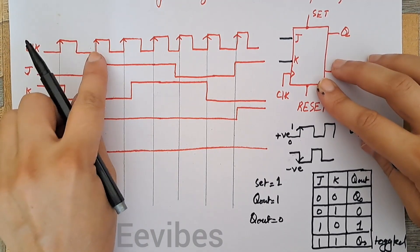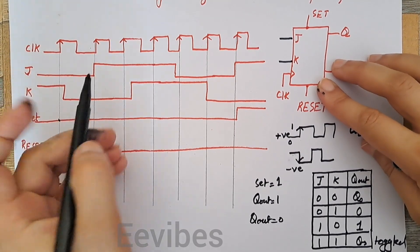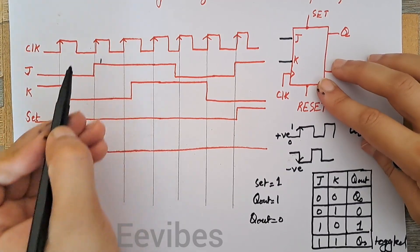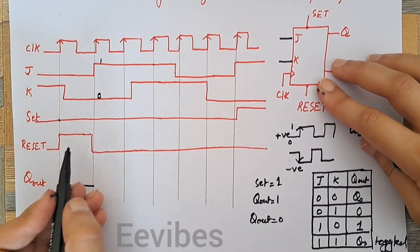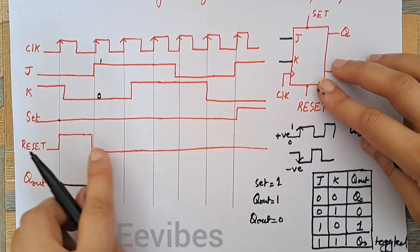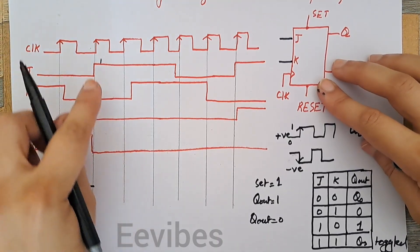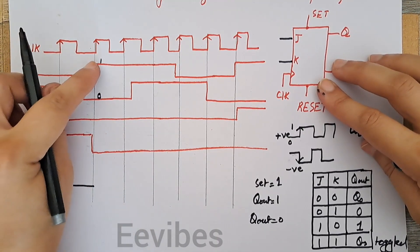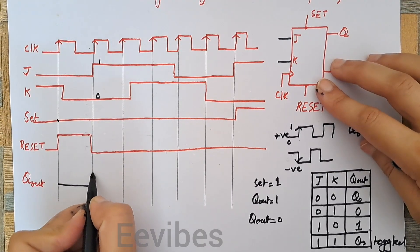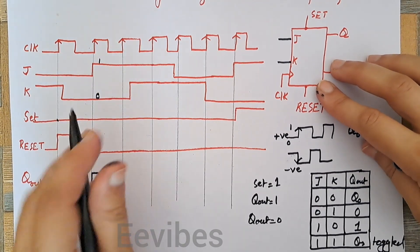When the next positive edge of the clock arrives, the value of the J input is equal to 1 and K is equal to 0. Since the reset signal is now deactivated — it's equal to 0 — the input will force the output to become 1. So for this clock cycle, the output is equal to 1.